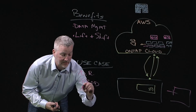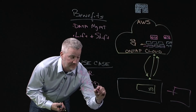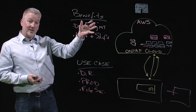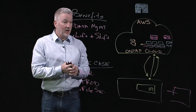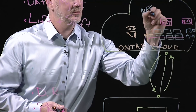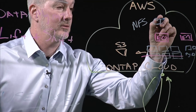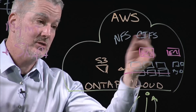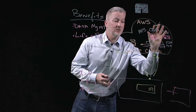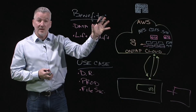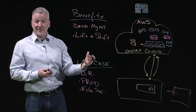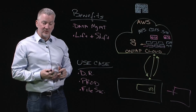We also have customers using ONTAP Cloud for file services — moving their organizational shares up to the public cloud to make them available. You can move NFS workloads, CIFS workloads, and iSCSI workloads as well. Your block and file services are now available in the public cloud with embedded data protection and Active Directory authentication.